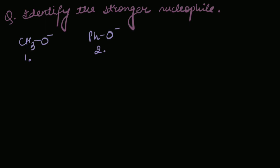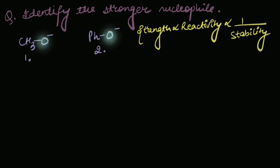Let's go to the next problem now. Identify the stronger nucleophile: CH3O- and PhO-. Reactivity or the strength of a nucleophile is inversely proportional to stability. Here, in either case, the negative charge is present on the oxygen atom. Okay.